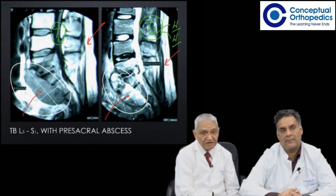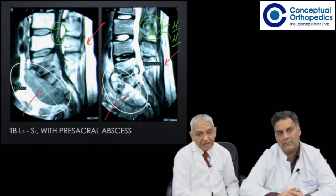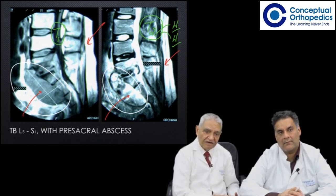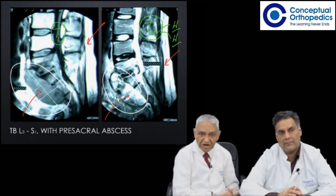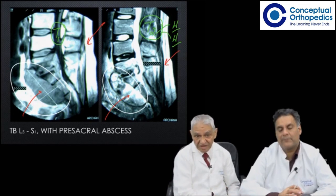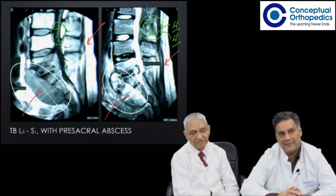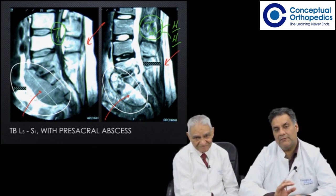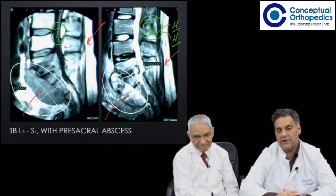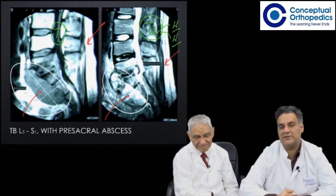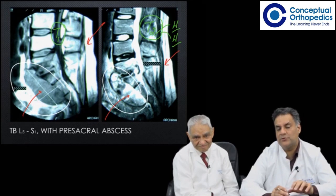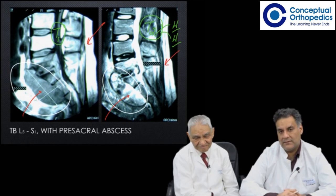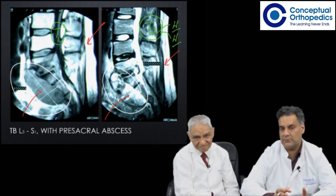Fluid does change signal between T1 and T2, but blood vessels can change signal depending on the speed of blood flow — sometimes they can cheat you signal-wise. As a mnemonic: T1 has a '1' — the first-year subject is anatomy, so T1 is better for anatomy and water is black. T2 has a '2' — the second professional subject is pathology, so T2 shows pathology better and water is white.